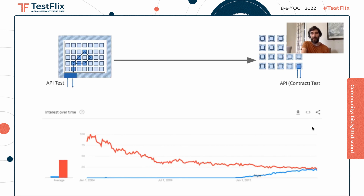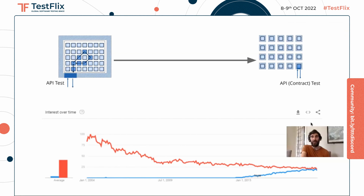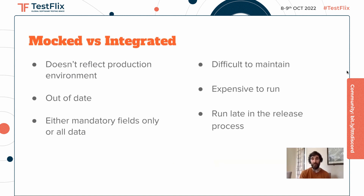Traditionally what's happened is that we've used API tests to test our services, collect the data, and then send the response. Whereas moving to microservices, we can now pinpoint those services that we want to test and test them in isolation. When it comes to end-to-end tests, we can use a mocked approach, a hybrid approach, or a fully integrated approach.